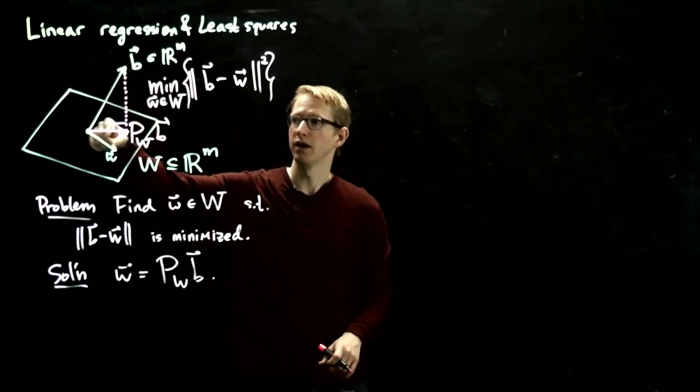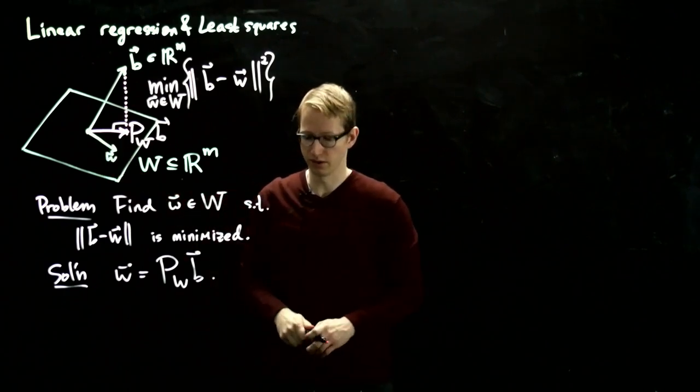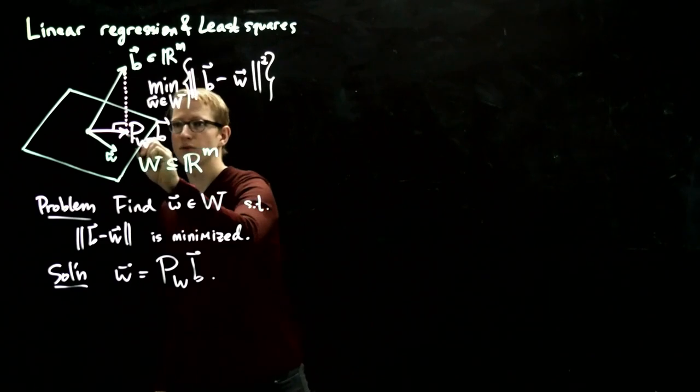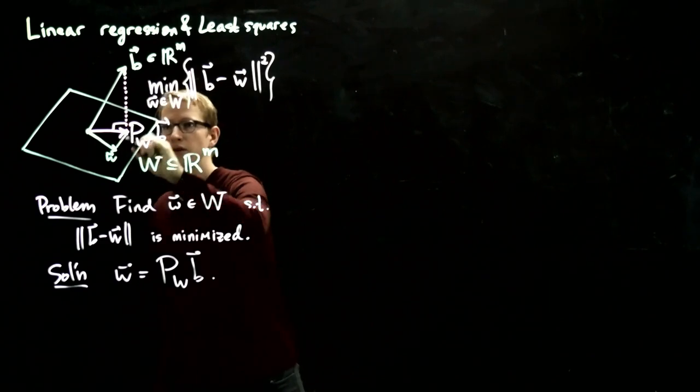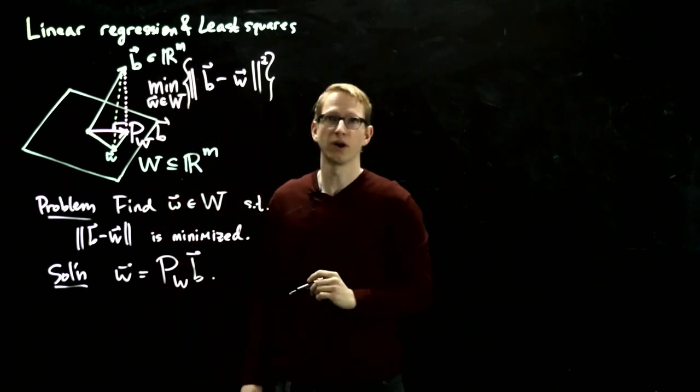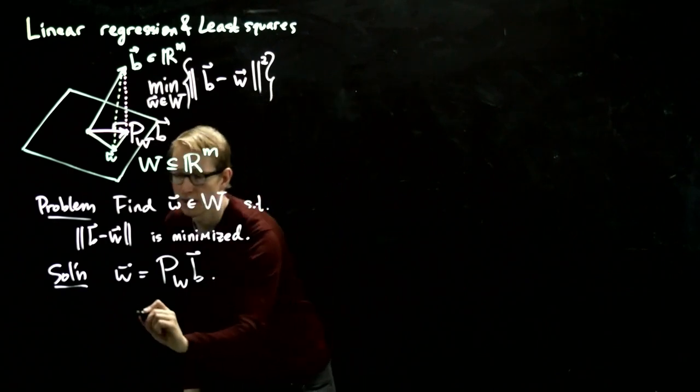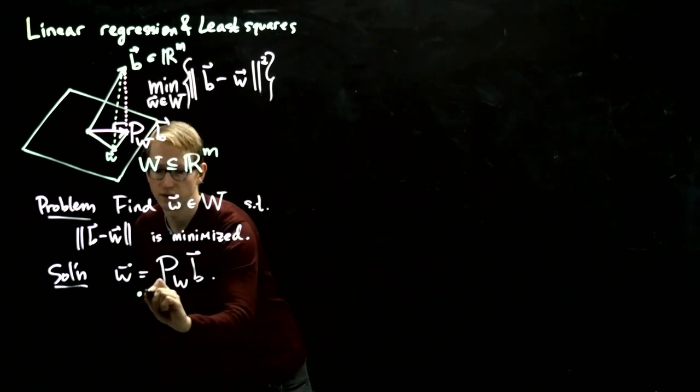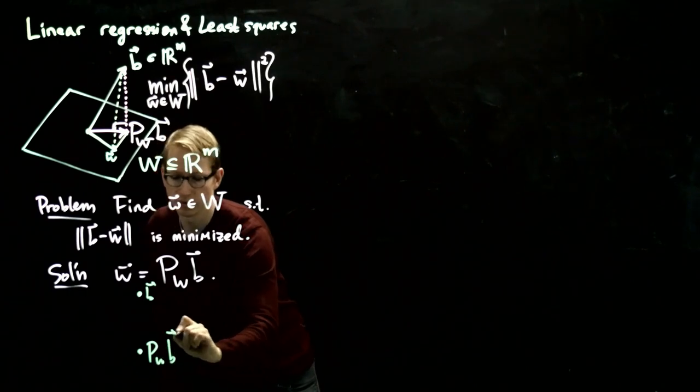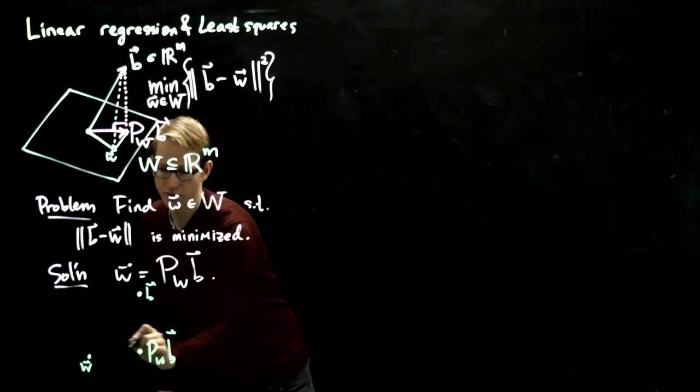Looking at this picture, I've already drawn the projection of b onto W and another arbitrary vector w. Now, these three vectors form a right triangle. So it looks a little bit skewed from this angle, but if you turn it this way, that triangle looks something like: here's b, here's the projection of b onto W, and here's some arbitrary vector w in the subspace W.